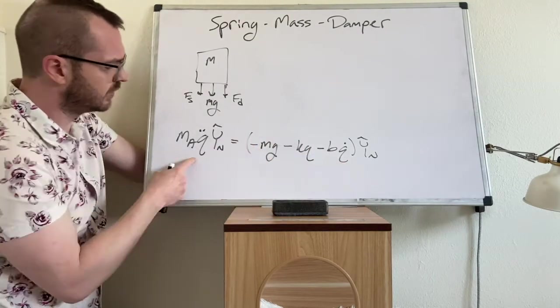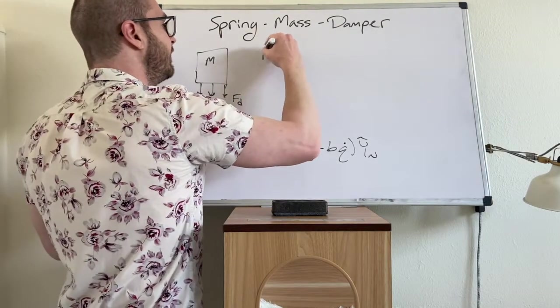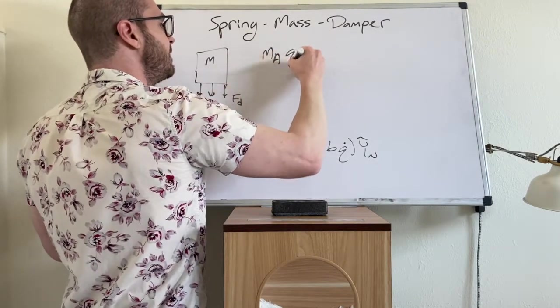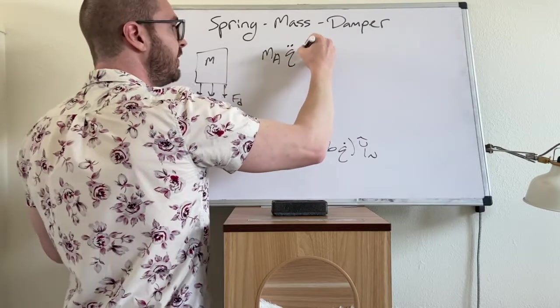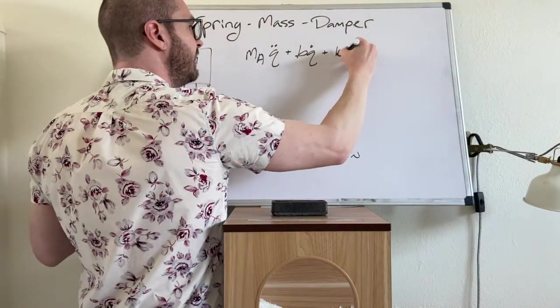So we have M A Q double dot plus B Q dot plus K times Q. And then the right hand side is equal to whatever applied forces are on the problem.